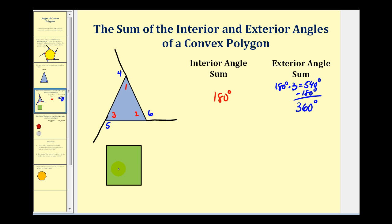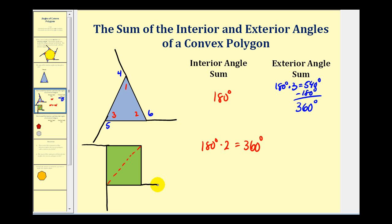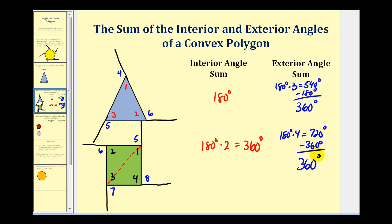For the interior angles of a quadrilateral, we break the interior into triangles. There are two triangles in the interior of a square, so the sum of the interior angles is 180 degrees times two, or 360 degrees. Extending each side creates four linear pairs, giving a total of 180 times four, or 720 degrees. Subtracting the interior angle sum of 360 degrees again leaves 360 degrees as the sum of the exterior angles.